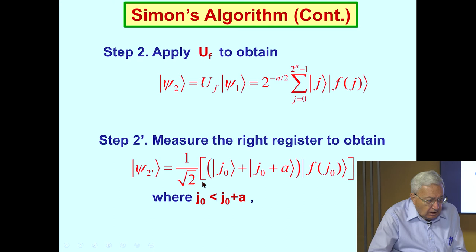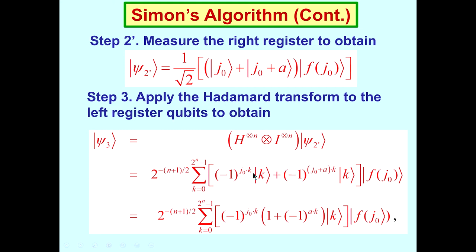We could do the same thing if we simply ignored the register and the rest of the algorithm. Step 2 prime, and we've gone through that.